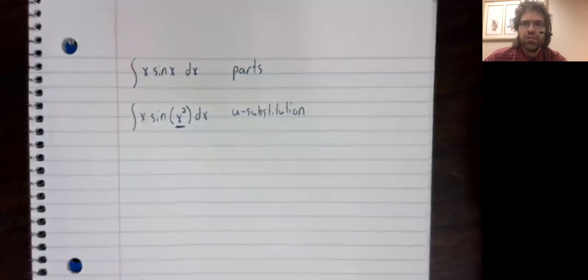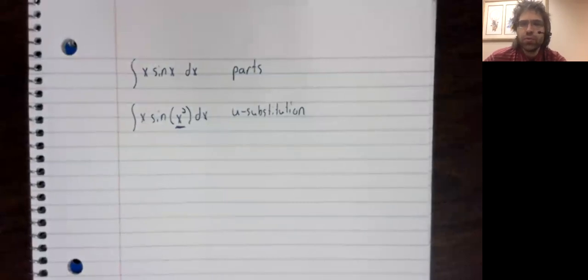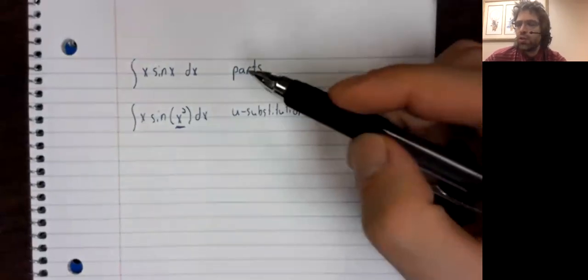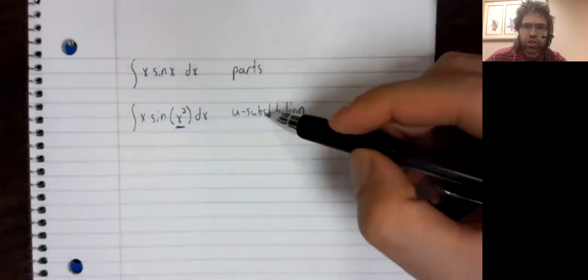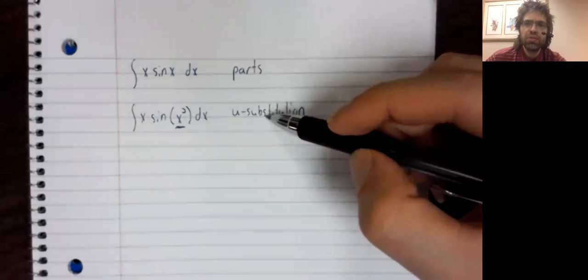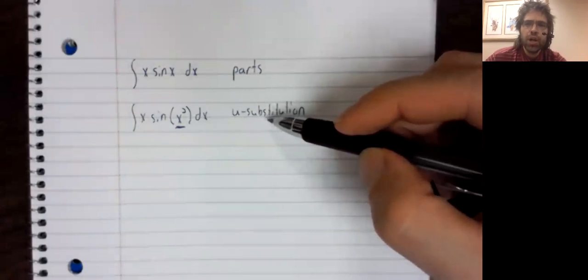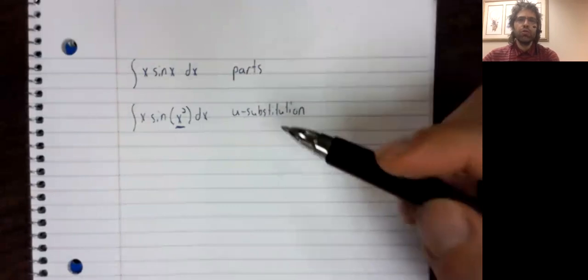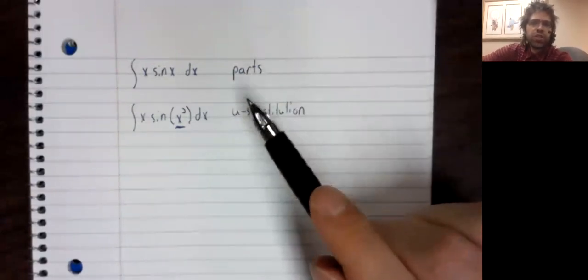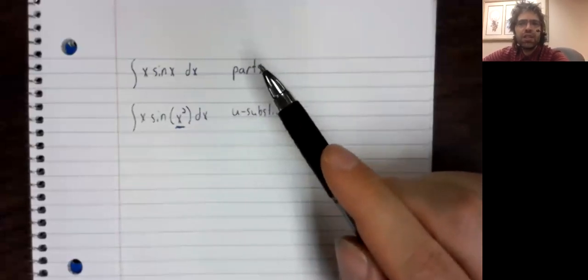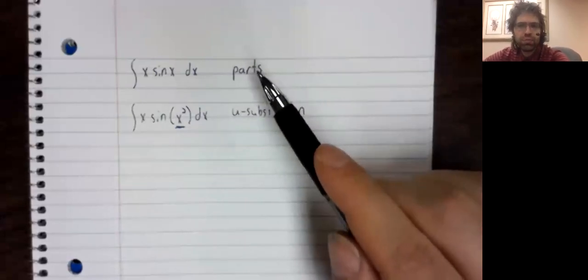And therefore, some trial and error is now to be expected. You see an integral, you try using parts, but actually it's a U-substitution problem. Or you see an integral, you try using U-substitution, but actually it's a parts problem.